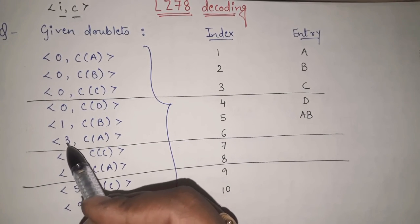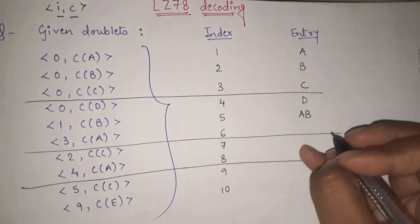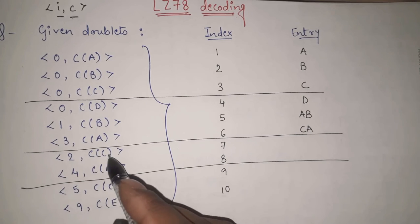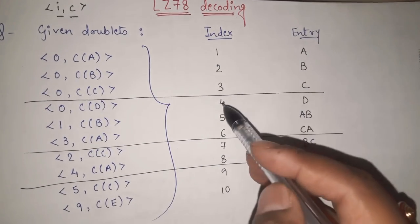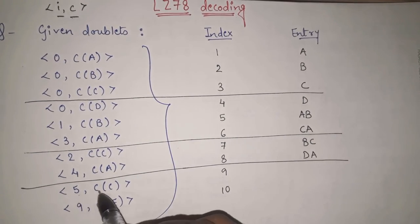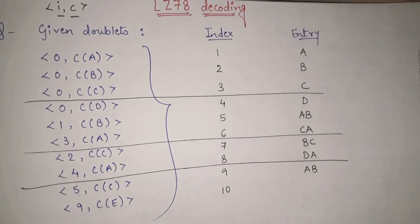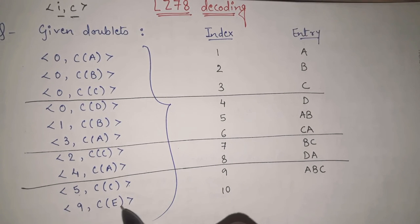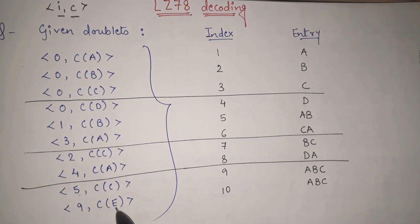Similarly, the next doublet is 3 with codeword A, so first I write the index 3 content which is C, and C will be appended with A, so the entry here is CA. Similarly 2 with codeword C — in index 2 I am having B and then codeword C, so entry is BC. Here 4 with codeword A — in index 4 I am having D and it will be appended with A, so entry is DA. Here 5 with codeword C — in the 5th index I am having AB, so AB will be as it is and it will be appended with codeword C, so my entry will become ABC.